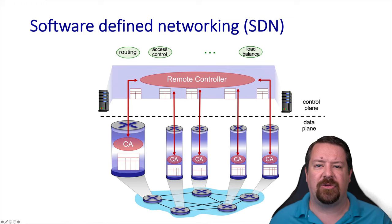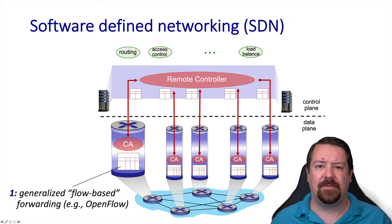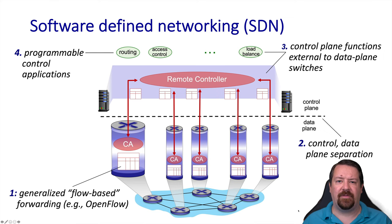Back to our SDN architecture: on top of the controller, we've introduced functions such as routing, access control, and load balancing, representing the logical functionalities the controller must provide. One could think of these as applications running on top of the controller that each contribute to building the flow tables. Since OpenFlow is the dominant SDN technology, we'll use OpenFlow terminology to describe the architecture: flow tables in the router's data plane, separation between control and data planes, control plane functionality and routing, and control plane applications that can get input from the network and define forwarding rules.